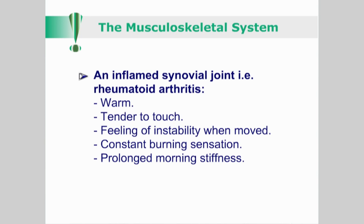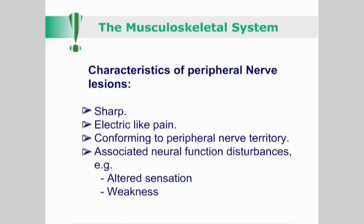Associated muscles are usually stiff and achy. An inflamed synovial joint, such as in rheumatoid arthritis, will be warm and tender to touch, with a feeling of instability when moved. The pain is often described as a constant burning sensation with prolonged morning stiffness. In contrast to connective tissues, peripheral nerve lesions may generate sharp, electric-like pain conforming to peripheral nerve territory, with associated neural function disturbances like altered sensation or weakness.